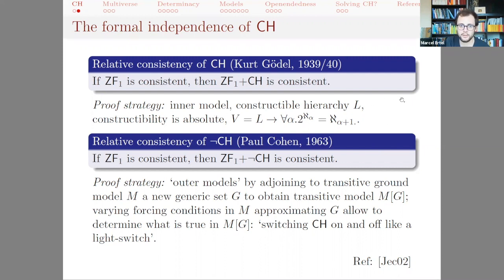So on the assumption that ZF is consistent, the continuum hypothesis is consistent, and Paul Cohen proved the companion result more than 20 years later, showing that if ZFC is consistent then also the negation of the continuum hypothesis is consistent with it. The strategy here was the construction of an outer model, which one gets by adjoining to a ground model M a new generic set G. If we vary the conditions in M approximating G, then we can essentially make the continuum hypothesis come out any way we like, so it has been likened to switching it on and off similarly to a light switch.